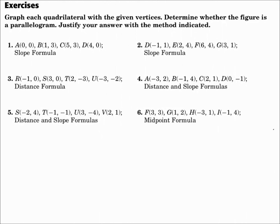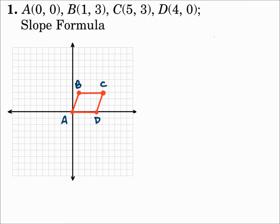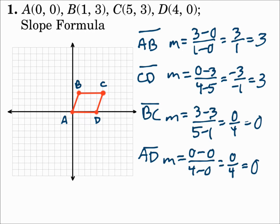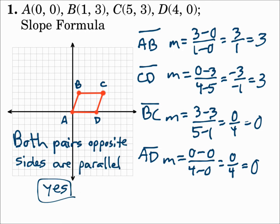Graph each quadrilateral with the given vertices and determine whether the figure is a parallelogram, justifying your answer with the method indicated. Number one gives the coordinates of the four vertices and says to use the slope formula. Parallel lines have the same slope, so we find the slope of each side. Sides AB and CD each have a slope of 3, so they're parallel. Sides BC and AD each have a slope of 0, so those sides are parallel too. Since both pairs of opposite sides are parallel, yes, it's a parallelogram.